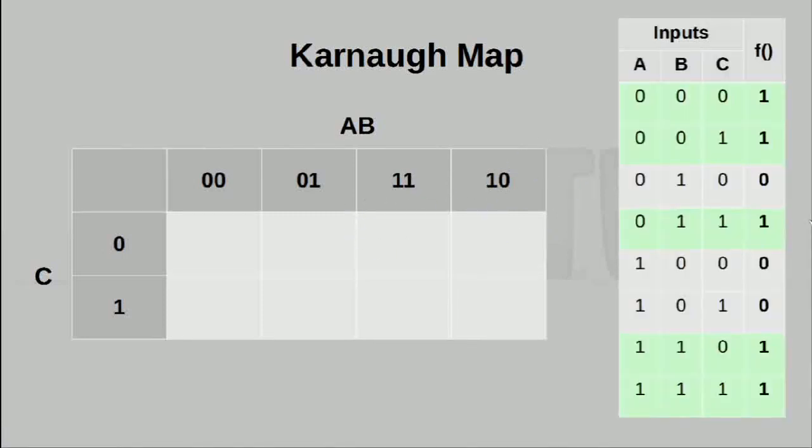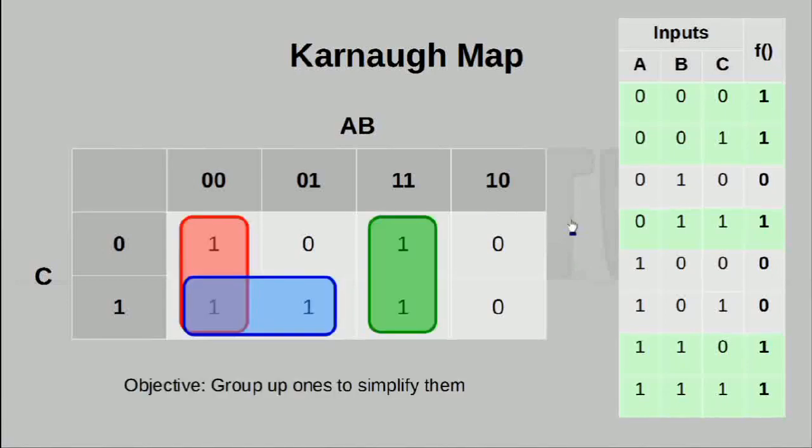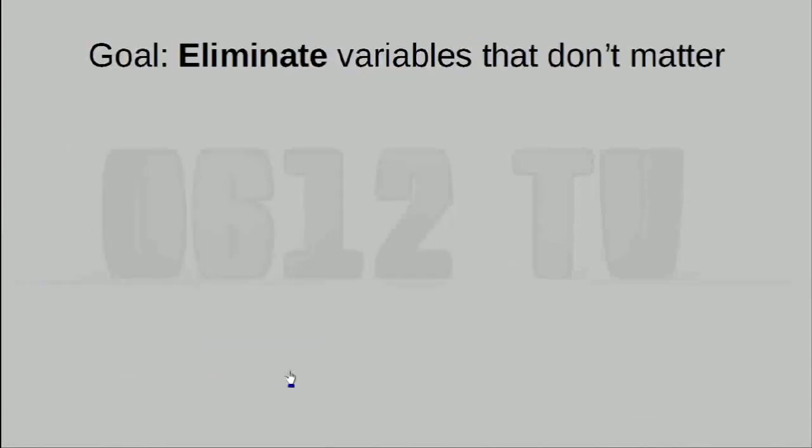Once we have this, we can simply grab the actual truth table itself and populate this Karnaugh map. Of course, once again, remember that the values here at the end of the truth table actually map to somewhere in the middle, thanks to the fact that we have all these labeled in gray code. The next thing we have to do is to actually identify groupings of all the ones. The whole point is, by actually creating groups like these, we can decide what to eliminate. And that's the whole point. We want to eliminate variables that don't matter.